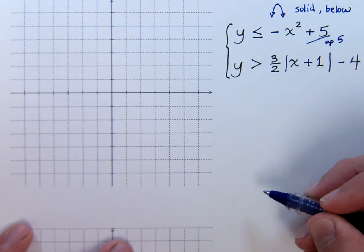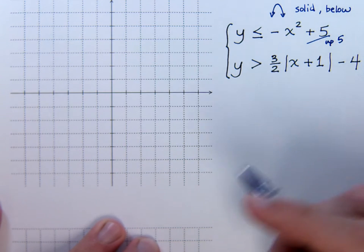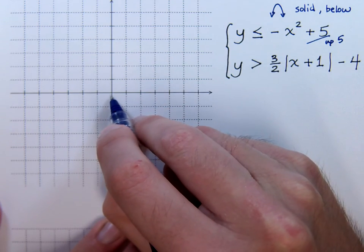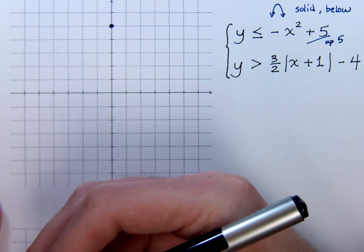And now we just put all that information together. So I didn't move left or right any. I just went from my normal vertex at 0, 0. I go up 5. And then I'm going to be opening down.